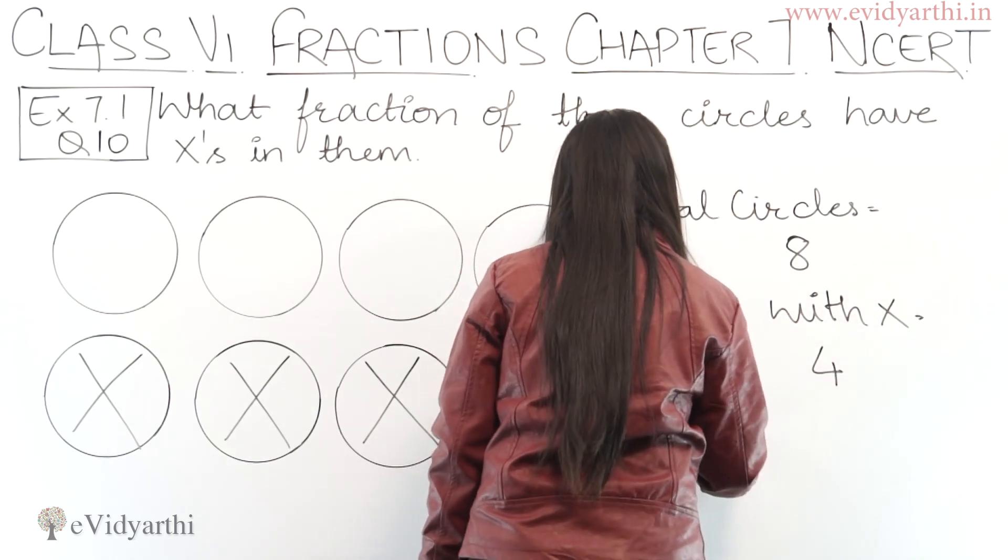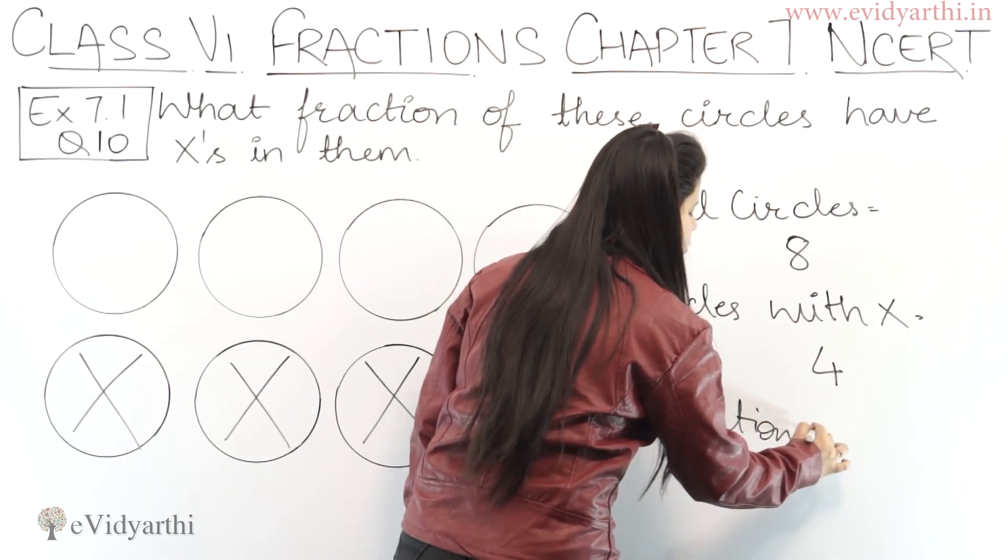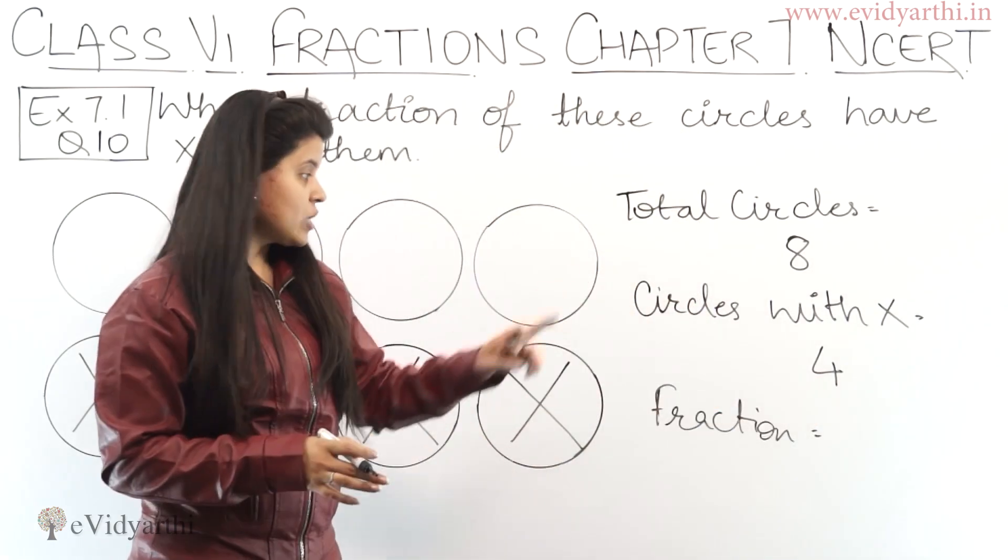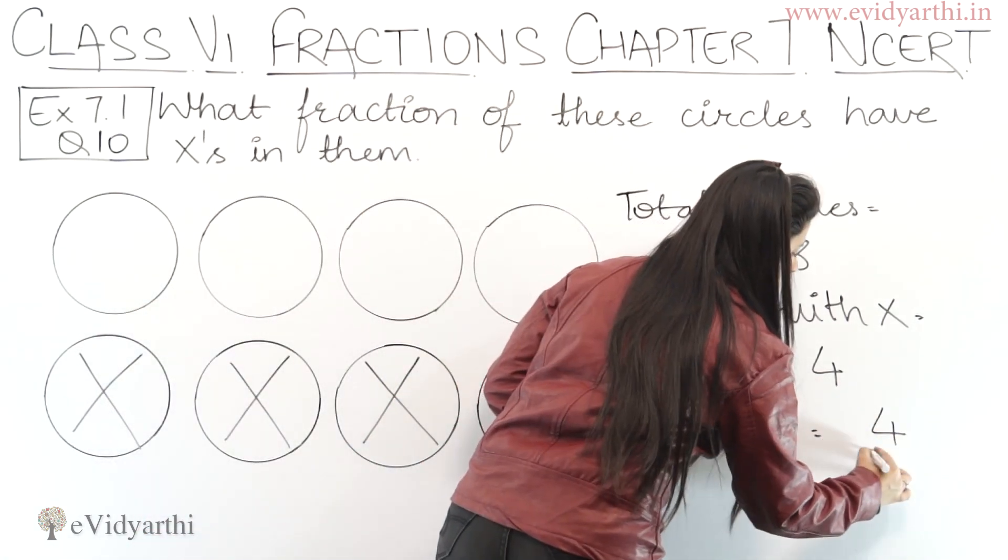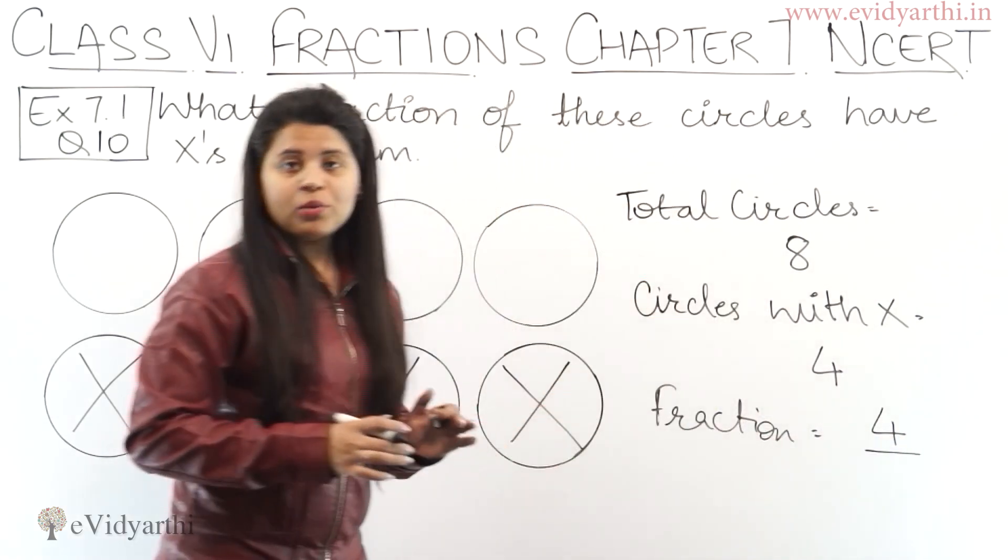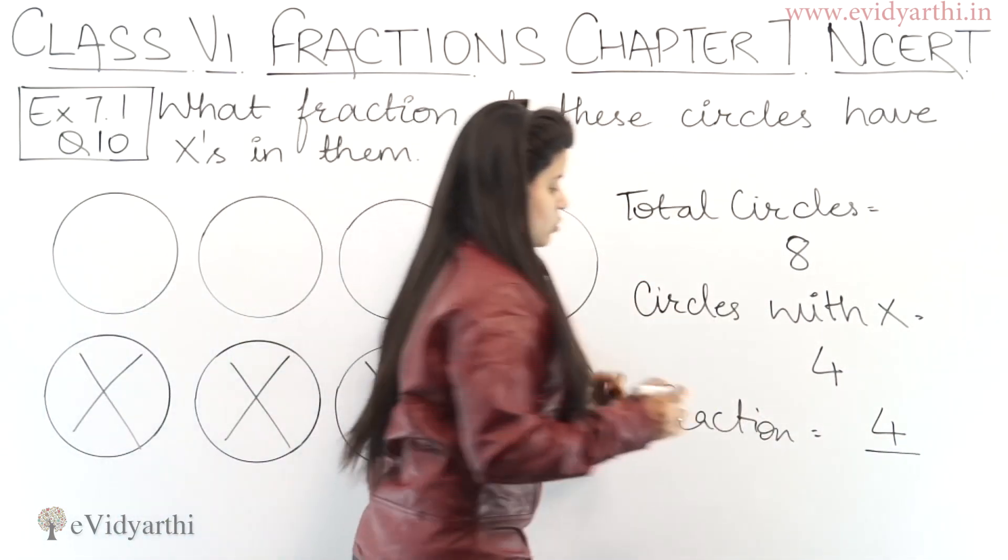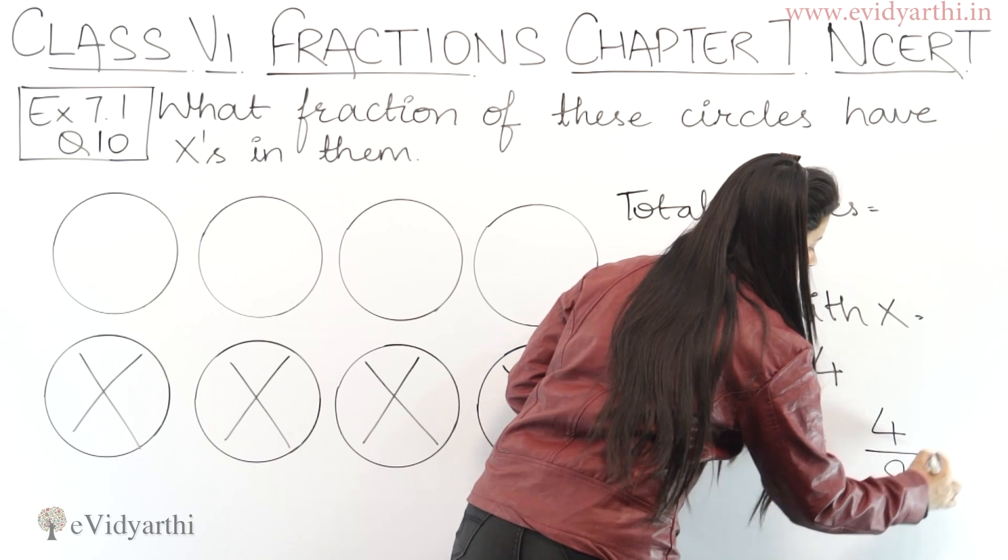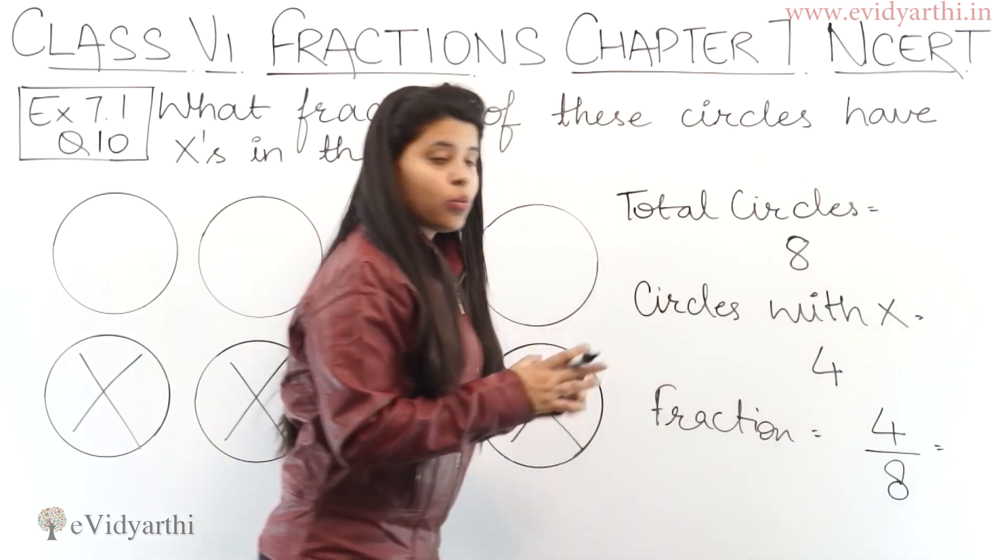Now if you have to write its fraction, how will you form the fraction? The fraction we are asked about, its number is 4. So 4 upon total number of circles, that is 8. This will be 4 upon 8, and if you see its lowest term...